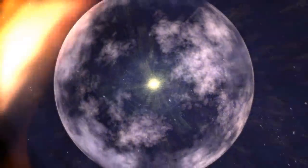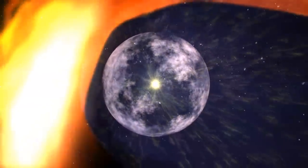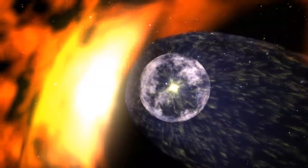The solar wind pushes out against this galactic wind, forming a bubble called the heliosphere. The outer boundary is called the heliopause and is blown into a teardrop shape by the galactic wind.